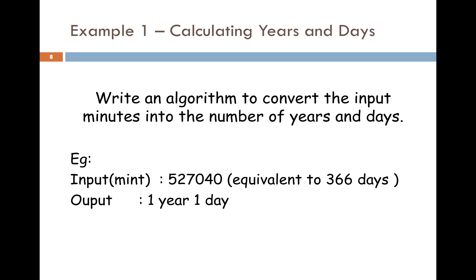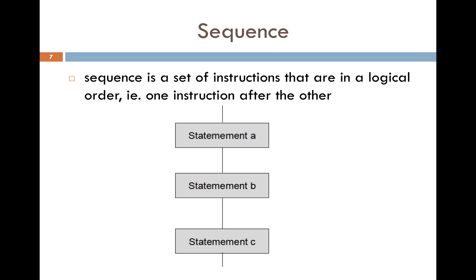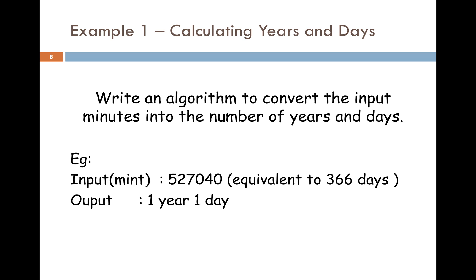In this session we'll look at sequence. Sequence is a set of instructions that are logically ordered — one instruction after the other: statement A, statement B, statement C. You have to be very careful that instructions follow in the correct logical order. For example, if you are calculating the average, you might have a set of instructions in a particular logical order.